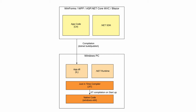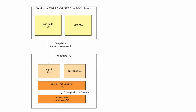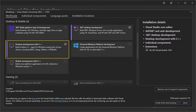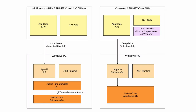Now let's see how ahead-of-time compilation changes the traditional .NET application architecture. We also have the C# application code and the .NET SDK. Additionally, we have the AOT compiler. In the case of compiling on Windows, we need to install the C++ desktop workload to get the C++ compiler. When we compile and run the app locally, we do not use ahead-of-time compilation.